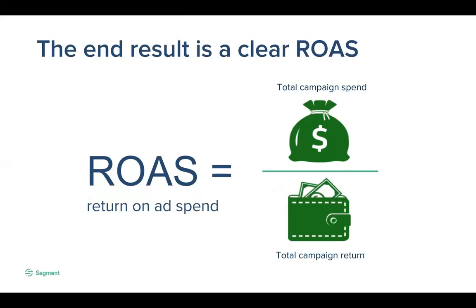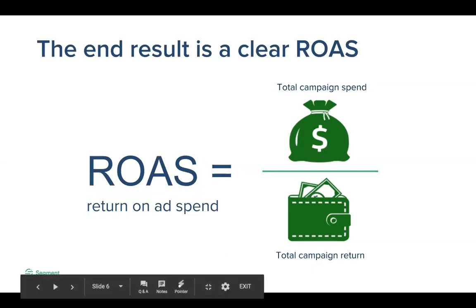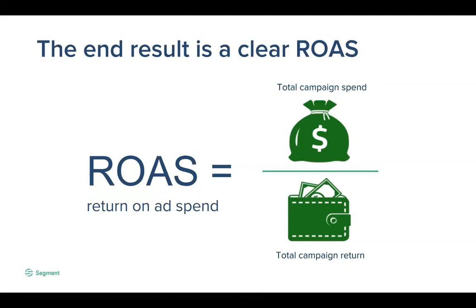This boils down to one very important metric: ROAS, or return on ad spend. How much are you spending to acquire new users versus how much money will those new users generate for your business over their lifetime with your brand? Looking at just clicks or conversions can give you false indicators. For example, if you pay $1 to acquire a new lead and they end up spending nothing and churn after a day, that's not good despite the fact that your conversion rates might be pretty good. However, if you spend $5 to acquire a user and they end up staying for months and spending $50, it's clear that that's well worth the extra spend upfront. Optimizing for ROAS is really the key to successful ad campaigns.